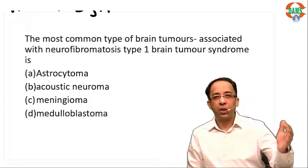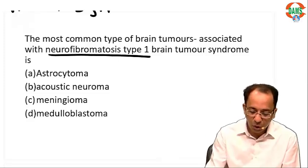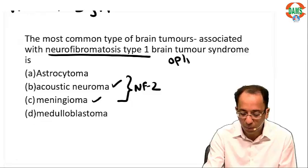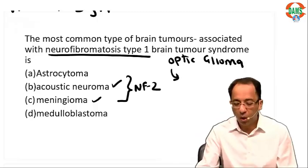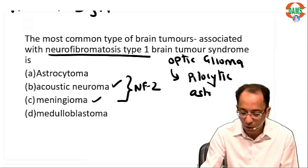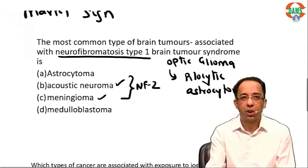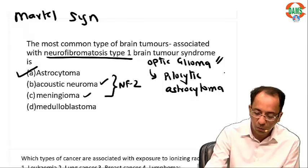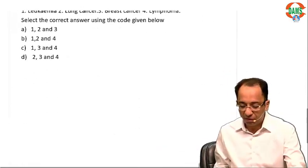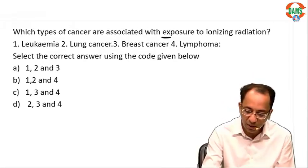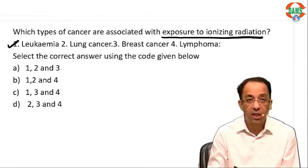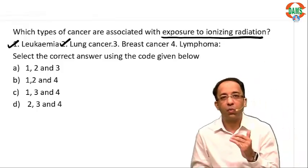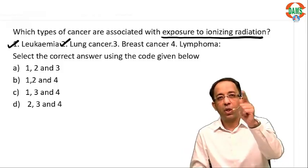Another question covered partly in radiology and pathology was about NF1. Remember: acoustic neuroma and meningioma are associated with NF2, while NF1 is associated with optic glioma. Optic gliomas are a special type of astrocytoma called pilocytic astrocytoma. So the answer for the classic tumor in NF1 is optic glioma, which is a pilocytic astrocytoma. The final radiology question from UPSC-CMS asked which cancers are associated with exposure to ionizing radiation. Leukemia is classically associated with ionizing radiation. Lung cancers are associated with radon exposure, which is a radioactive gas.